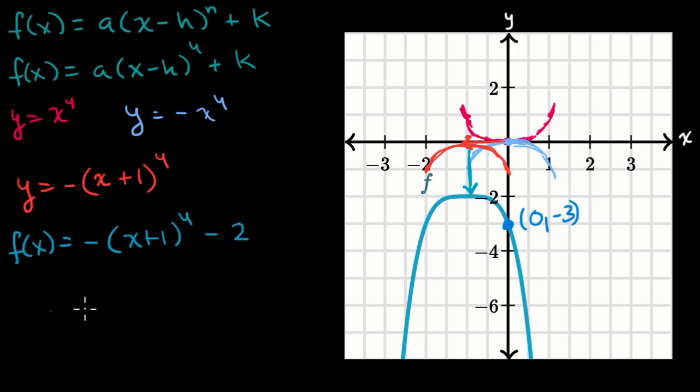And we can even validate that this point is indeed on that curve. If we evaluate f(0), that's negative, then zero plus one to the fourth power minus two. So this is going to equal one, so this equals negative one minus two, which equals negative three. f(0) is indeed equal to negative three, and we're done.